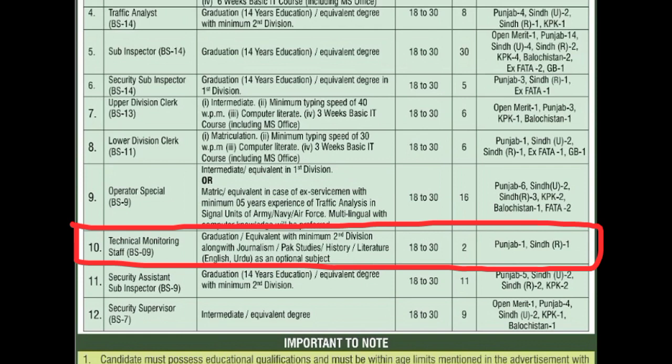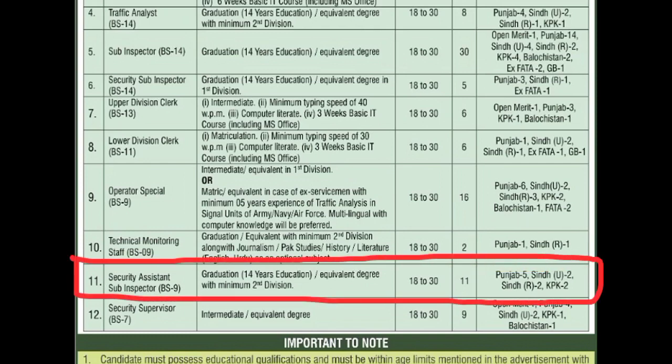Technical Monitoring Staff, scale 9 — graduation or equivalent with minimum 2nd division, along with journalism, Pakistan studies, history, और literature (English या Urdu) as an optional subject। Age limit: 18 to 30 years। 2 vacancies: Punjab की 1, Sindh Rural की 1। Security Assistant Sub-Inspector, scale 9 — graduation, 14 years education, equivalent degree with minimum 2nd division। Age limit: 18 to 30 years। 11 vacancies: Punjab की 5, Sindh Urban की 2, Sindh Rural की 2, KPK की 2।